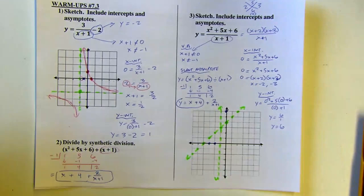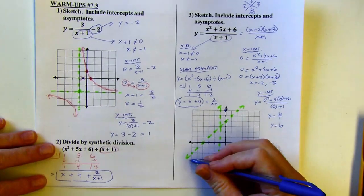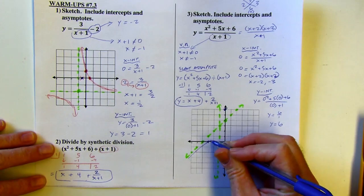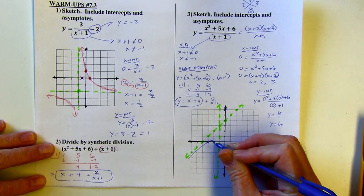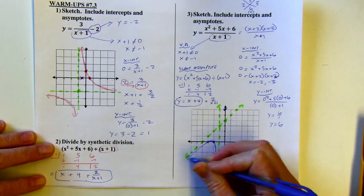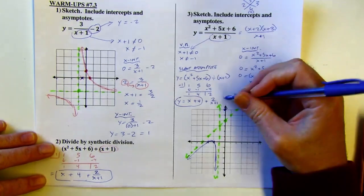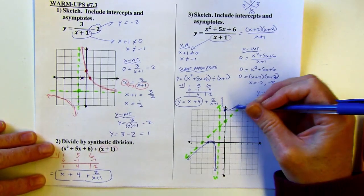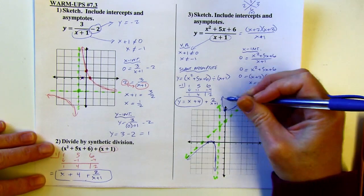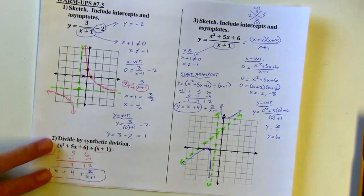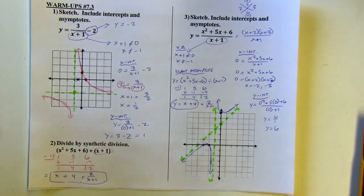From this information I can make a pretty decent graph. I'll have a curve that just pops over the x-axis there, and then the mirror image on the other side, using the intercepts and asymptotes to guide how I draw the curve. And there we go — that's the end of the warm-up. I'll see you next time.